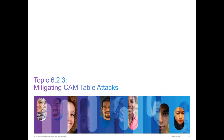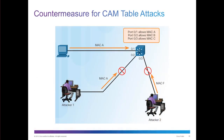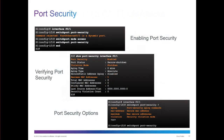To mitigate CAM table attacks, countermeasures include setting how they're updating and setting pruning. Port security is a very big one — you can enable or disable port security and set what happens when violations occur. You enable it, verify port security is turned on, set how many MAC addresses you want, then set the appropriate options: aging, MAC address maximums, and what to do on a violation.